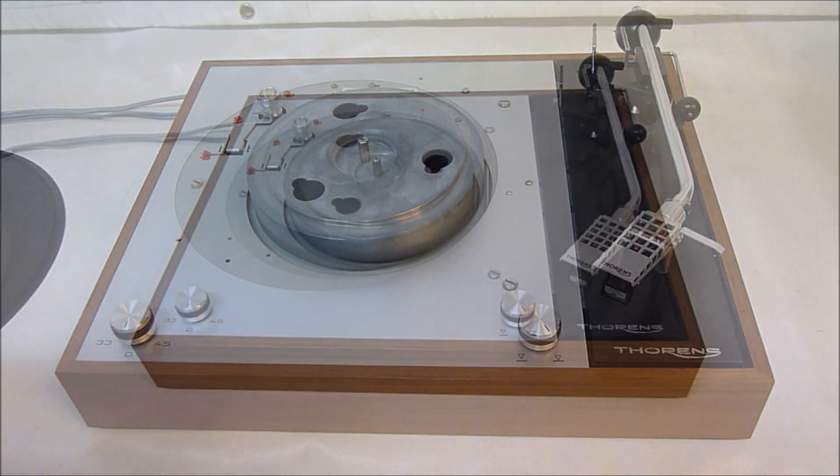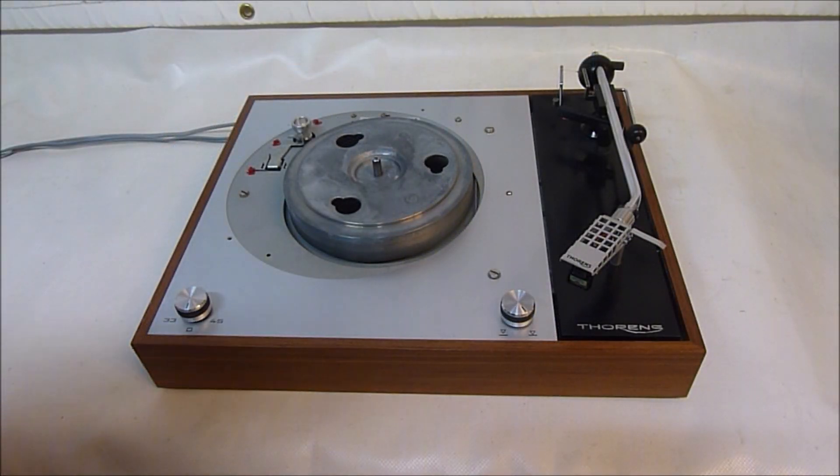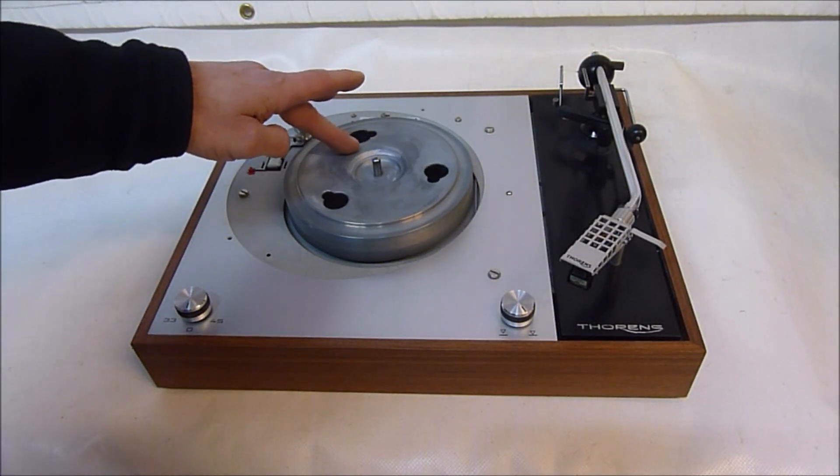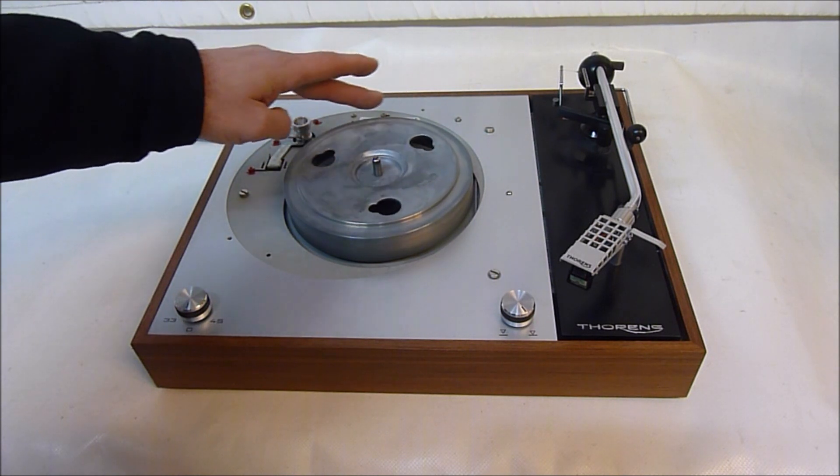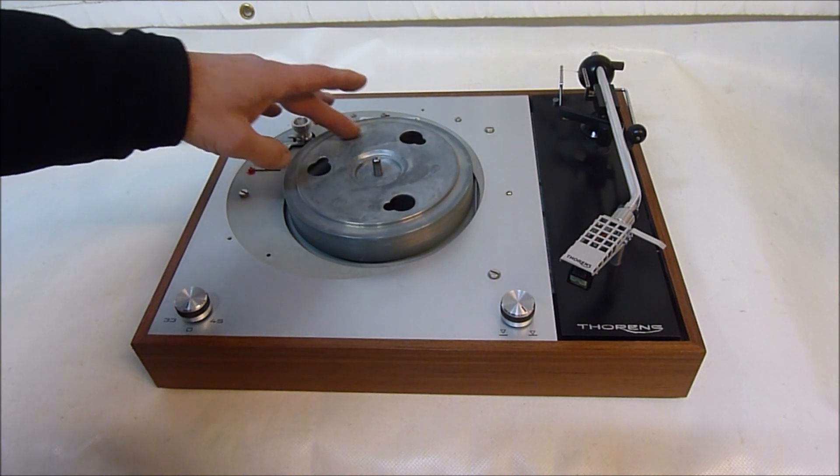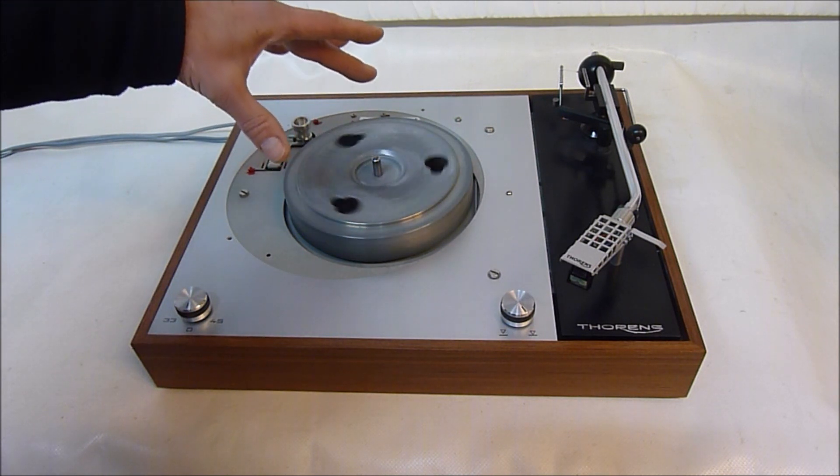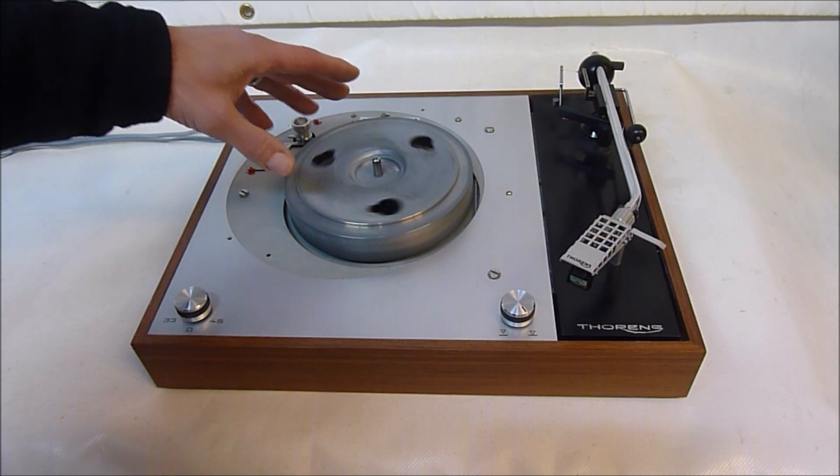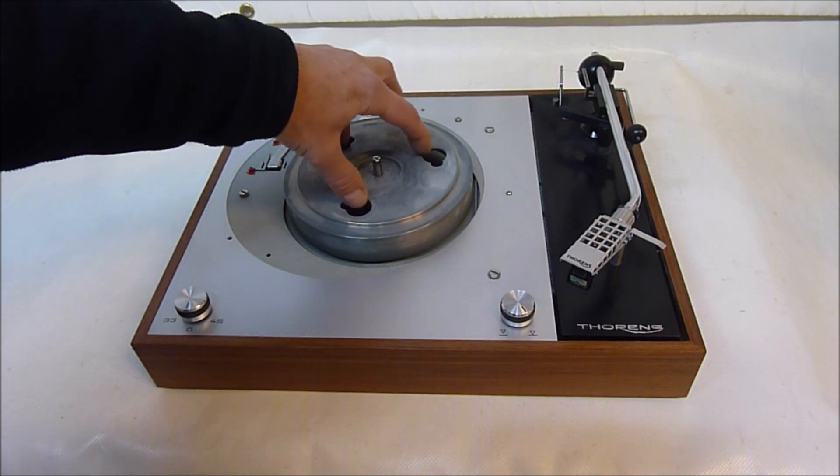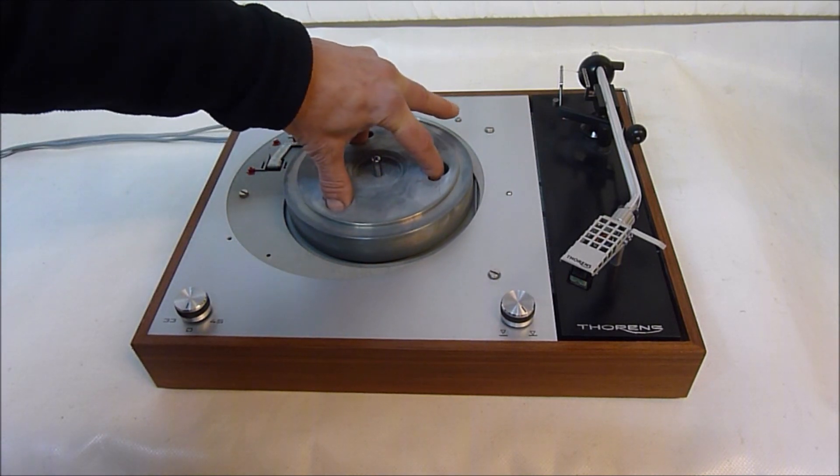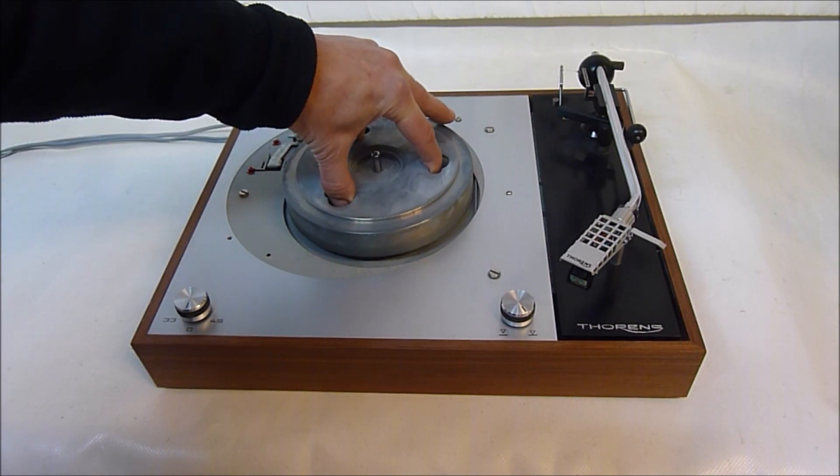Now that we've got the platter off, we can look at the hub. The hub should rotate freely like it's doing—this looks very good, very encouraging. We'll check the bearing. Put your fingers into the holes here.